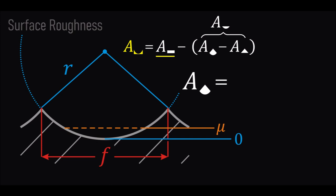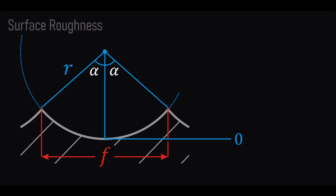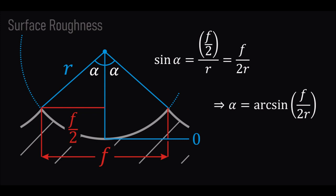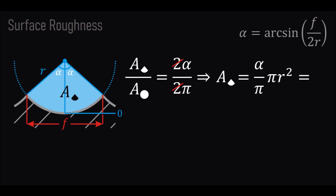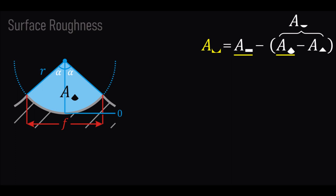Now it's time to find the area of the circular sector. Let's draw the center radius and call each of those two angles alpha, and consider the segment which is half of F. The sine of alpha equals (F/2) divided by the hypotenuse R, so alpha is the arcsine of F over 2R. By a simple proportion: the area of the circular sector over the area of the full circle equals the angle 2α over 2π. Simplifying, the circular sector area is α·R². Substituting alpha gives the final result for the sector area in terms of F and R.